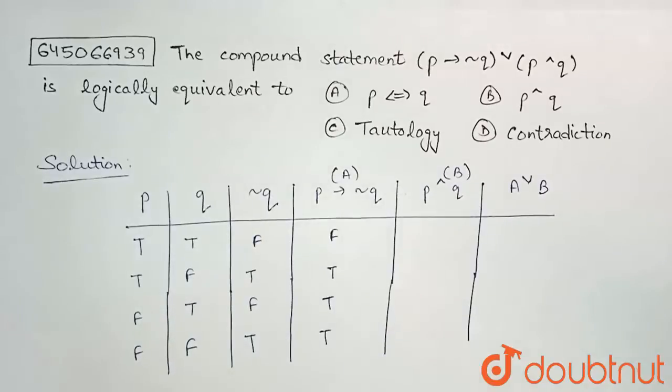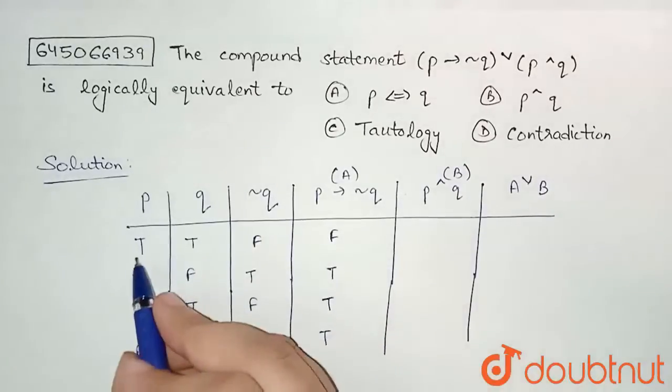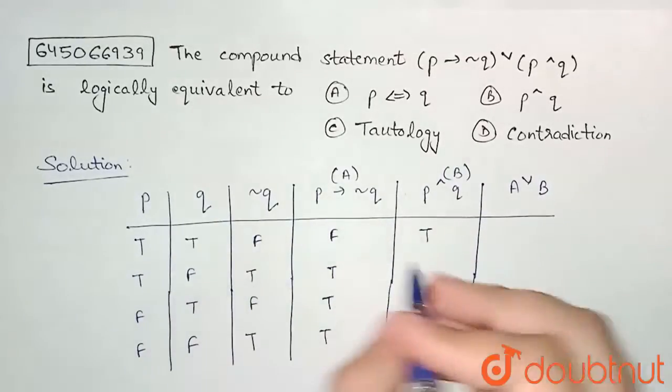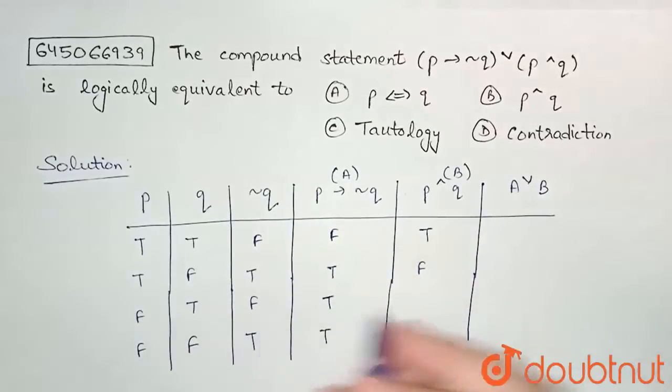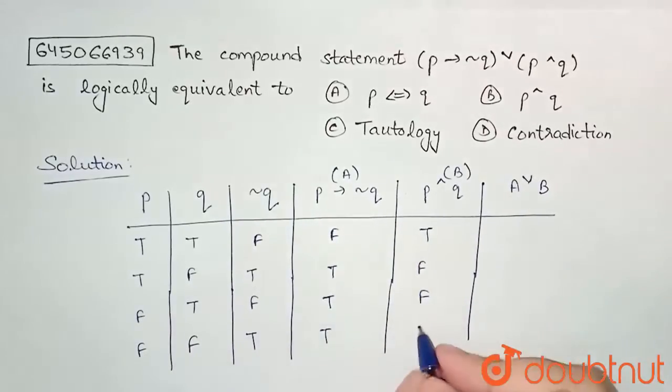Now p and q will be: true and true is true, true and false is false, again false, and false and false will be false, and false and true is also false.